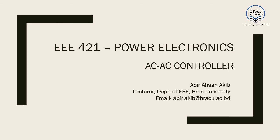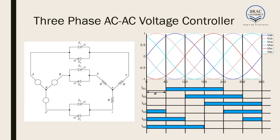Hello everyone. In the second lecture of AC-AC controller, we will be learning about 3-phase AC-AC voltage controller. We can see that the 3-phase AC-AC voltage controller looks much like a 3-phase half-wave rectifier. The only difference is that with every switch connected in the forward direction, in parallel there is another switch connected with opposite polarity, so current can flow in both directions.